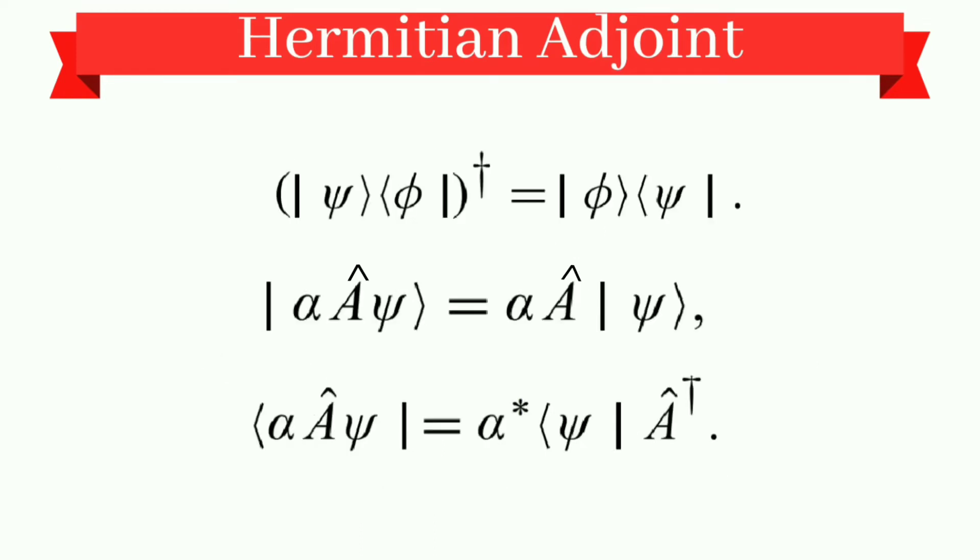Now, talking about a few more properties. The Hermitian adjoint of the operator, that is ket psi bra phi, is given by ket psi bra phi whole to the power dagger, which will give us a flip value: ket phi and bra psi. Here, what is happening? They are flipping their positions. Ket psi is changing into bra psi and bra phi is changing into ket phi.